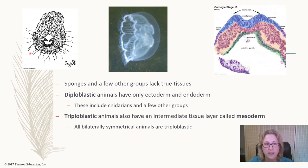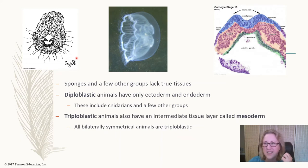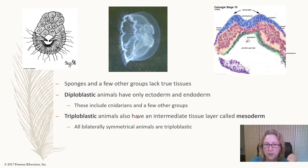This is a sponge embryo at its little swimming embryonic stage. You can see it has two kinds of cells, and the flagellated cells end up on the inside in the adult sponge. This is not really the same as what diploblastic animals like jellyfish and ctenophores have. Cnidarians — the jellyfish — have two layers with no mesoderm in between.